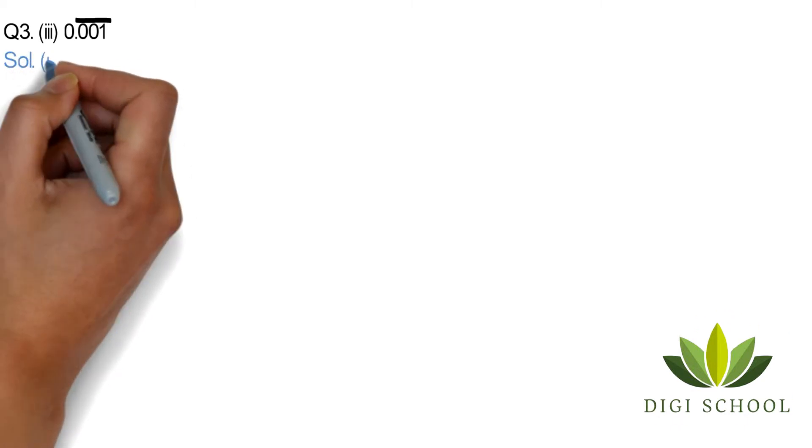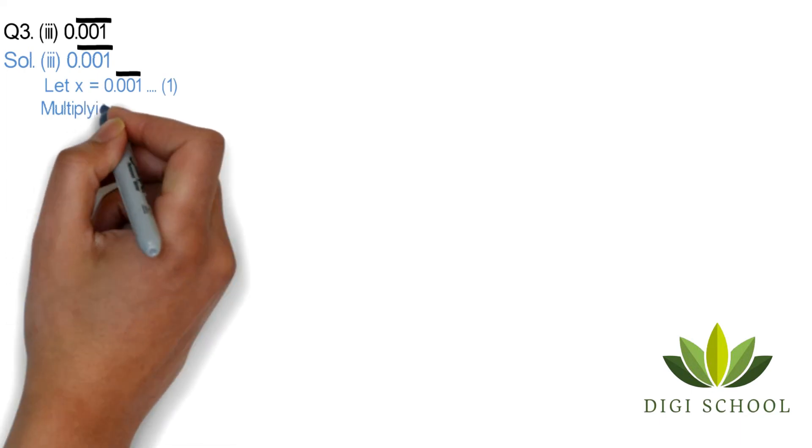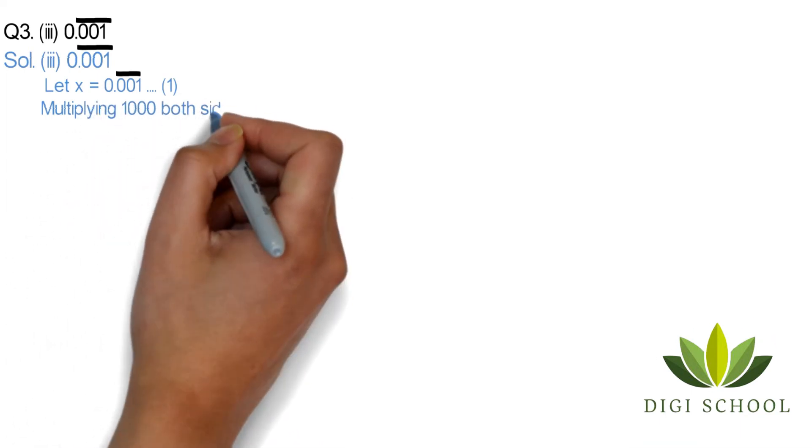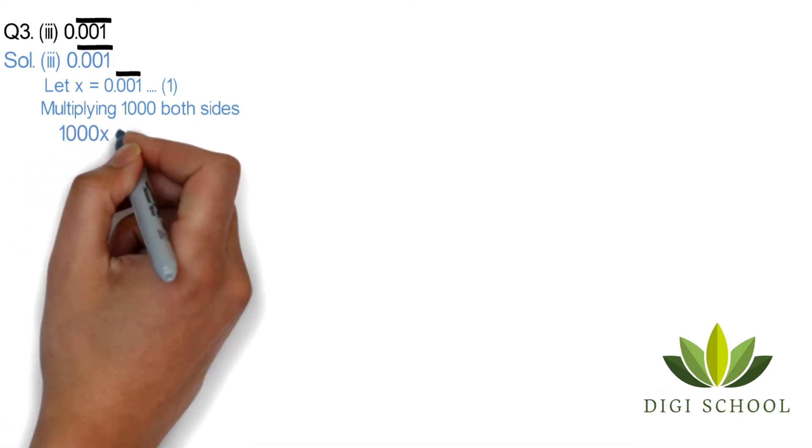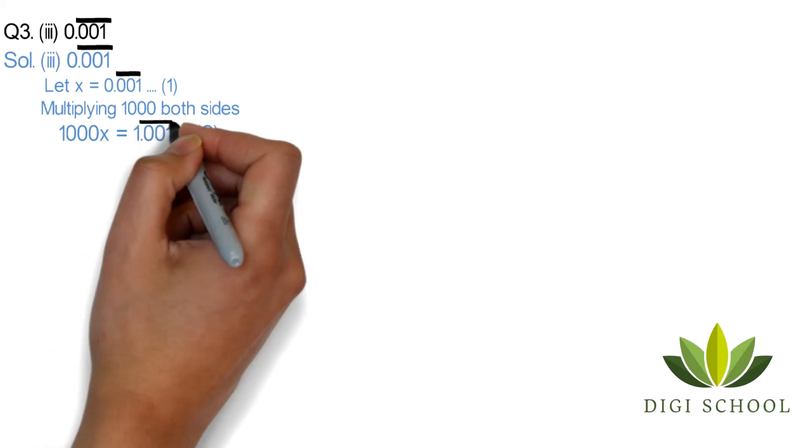Question 3, part 3: 0.001 bar. There are three numbers under the bar, so this time we will let x equal 0.001 bar. This will be our first equation. We will be multiplying both sides by 1000 because there are three numbers under the bar. So 1000x equals 1.001 bar—this would be our equation 2.